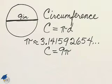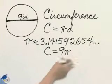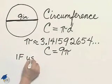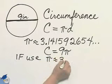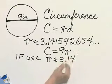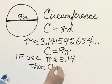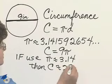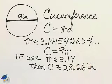But what to use for pi? Pi is irrational, and you can see the first few digits of it. If I use pi is about 3.14, then the circumference, when I multiply by 9, is about 28.26 inches.